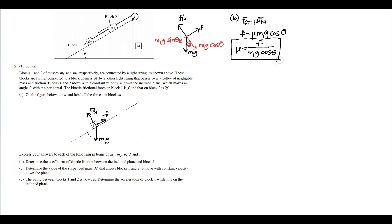Part C: Determine the value of the suspended mass M that allows blocks one and two to move with constant velocity down the plane. So if you want constant velocity, that means the net force must equal zero.